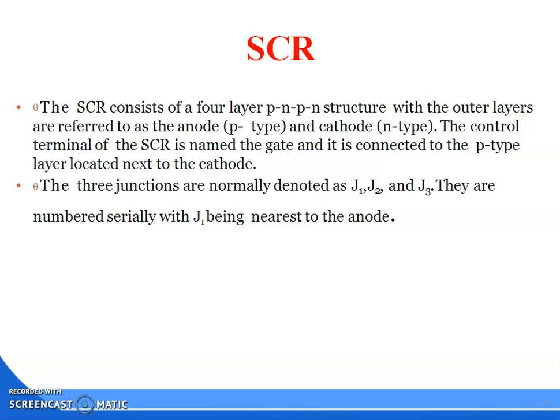The three junctions are normally denoted as J1, J2, and J3. J1 is the upper junction, junction J2 is the middle junction, junction J3 is the lower junction. They are numbered serially with J1 being nearest to the anode.